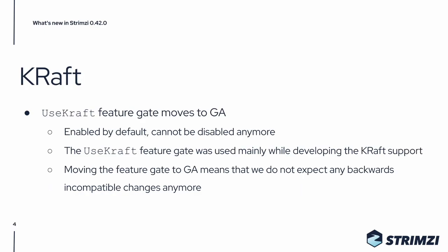One of the big milestones achieved in this release is the promotion of the UseKRaft feature gate to GA. It means that this feature gate is now enabled by default and cannot be disabled anymore. The UseKRaft feature gate was used mainly while developing the KRaft support in Strimzi. Moving the feature gate to GA means that we do not expect any backwards incompatible changes to the KRaft support anymore.